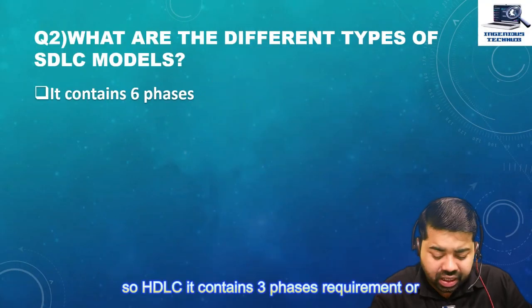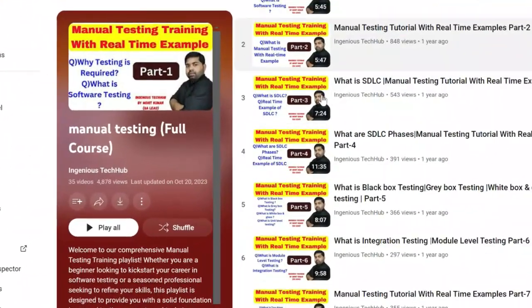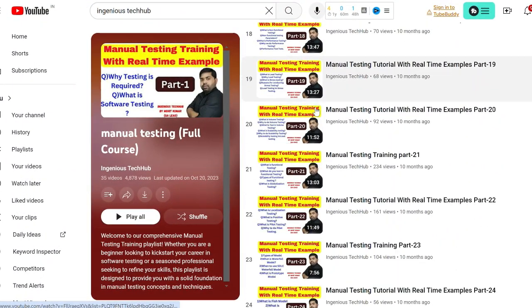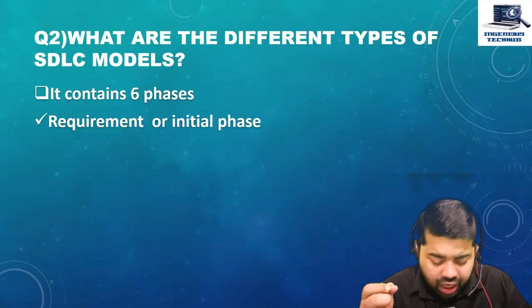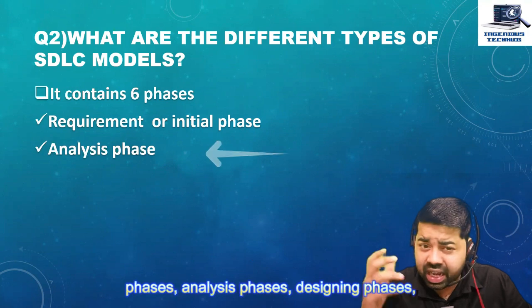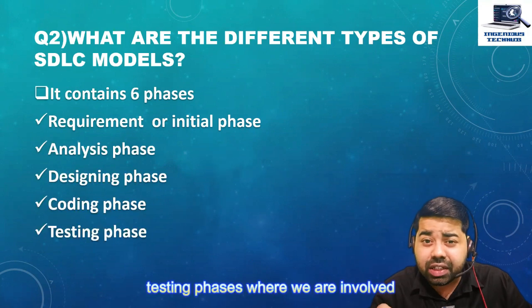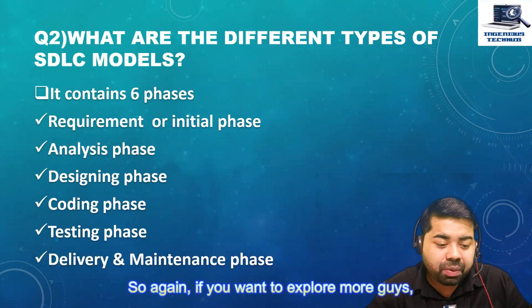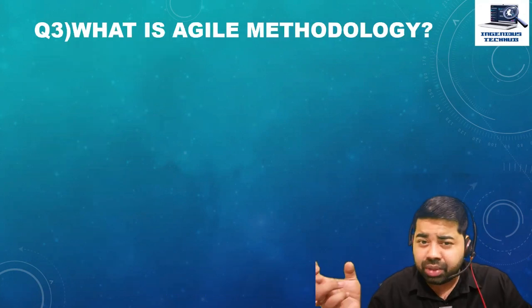SDLC contains six phases: requirement or initial phase, analysis phase, designing phase, coding phase, testing phase — where we are involved — and delivery and maintenance phase. I have uploaded around 35 videos for manual testing, so you can go watch my series in a playlist for more clarity on SDLC concepts.